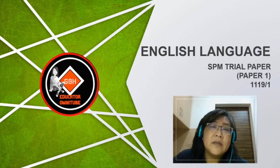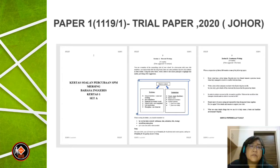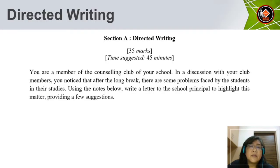Hi, today we meet again for another lesson. This is for English language and we are discussing the SPM Trial Paper. It is for Paper 1, code 1119/1, for the year 2020 from the state of Johor. The lesson is on directed writing, which is Section A, worth 35 marks with a suggested time of 45 minutes.